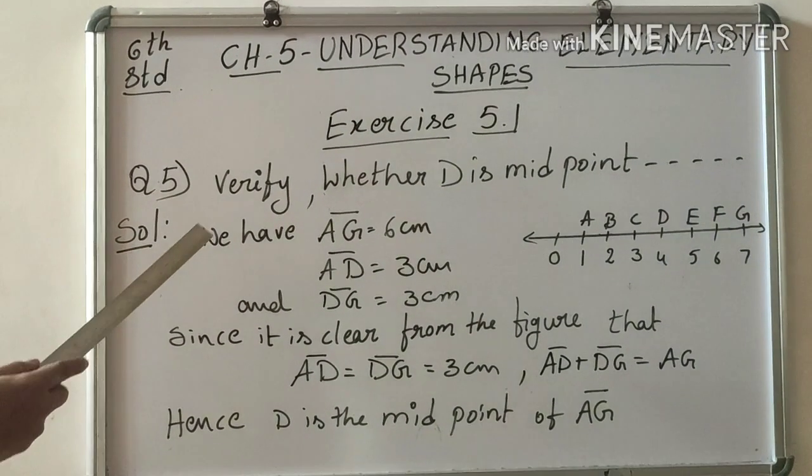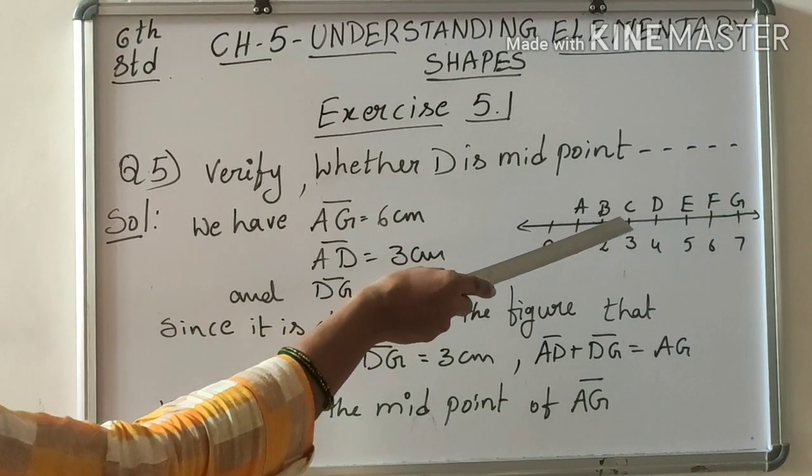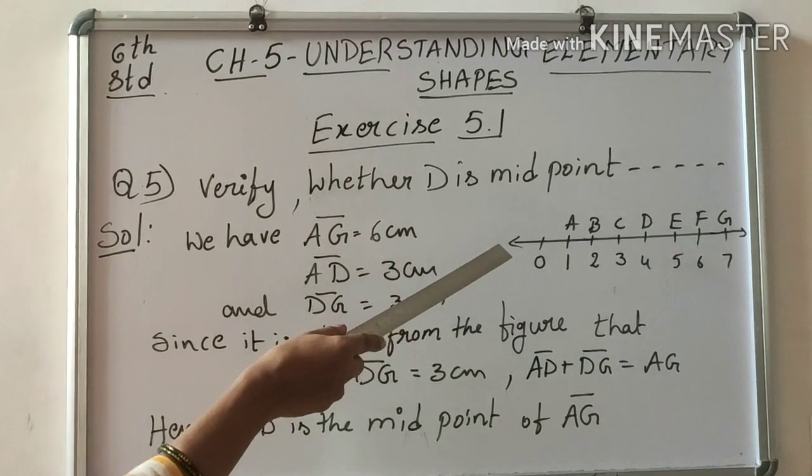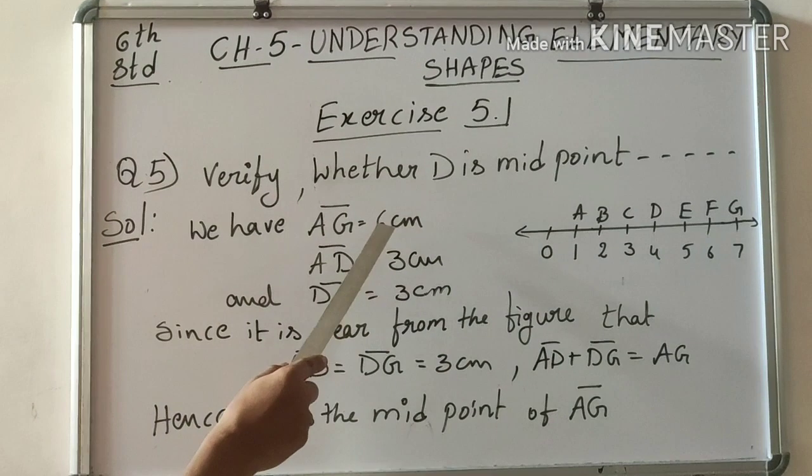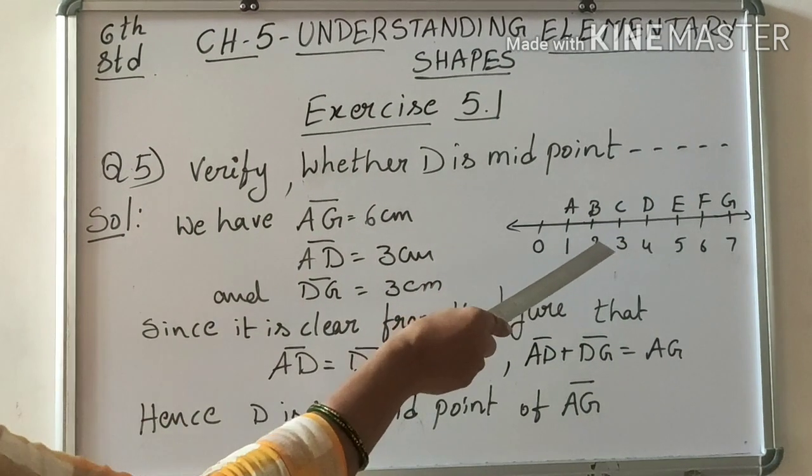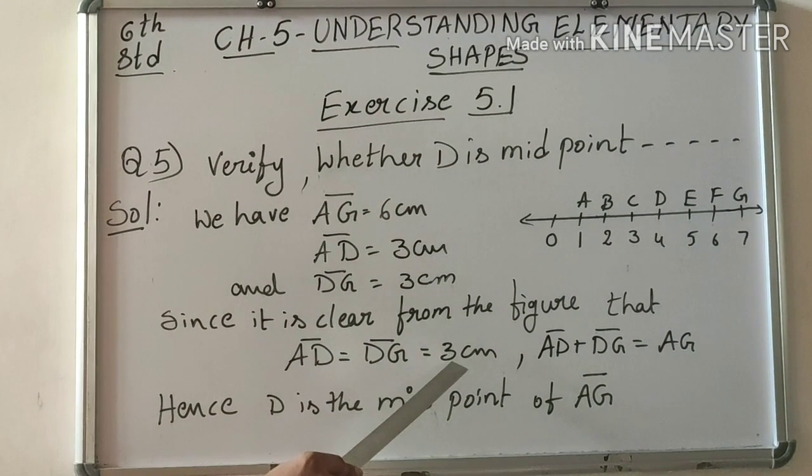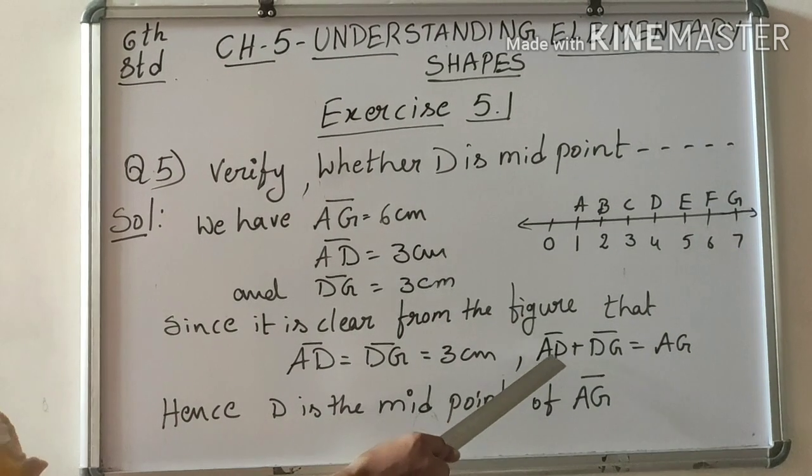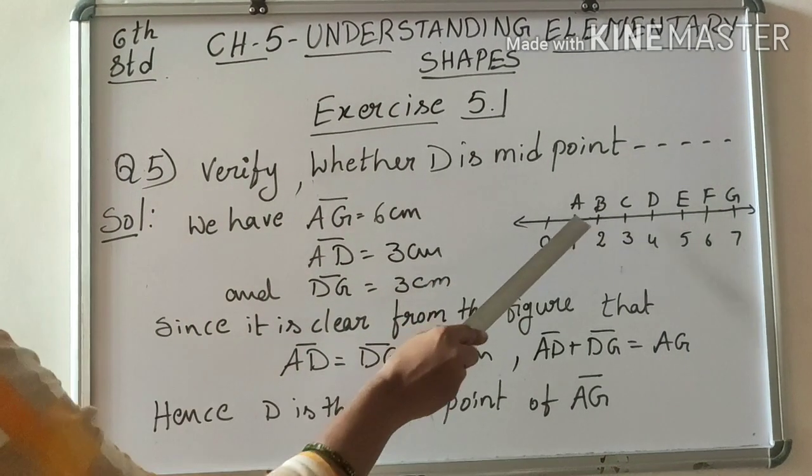Next question number 5. Verify whether D is midpoint of AG. Here there are some points A, B, C, D, E, F, G on the line. The distance between the two points is 1 cm. We have AG equal to 6 cm. Clearly AD equal to 3 cm and DG also 3 cm. Since it is clear from the figure that AD equal to DG, that equal to 3 cm, so we can write AD plus DG equal to AG. 3 plus 3, that equal to 6. So D is the midpoint of AG.